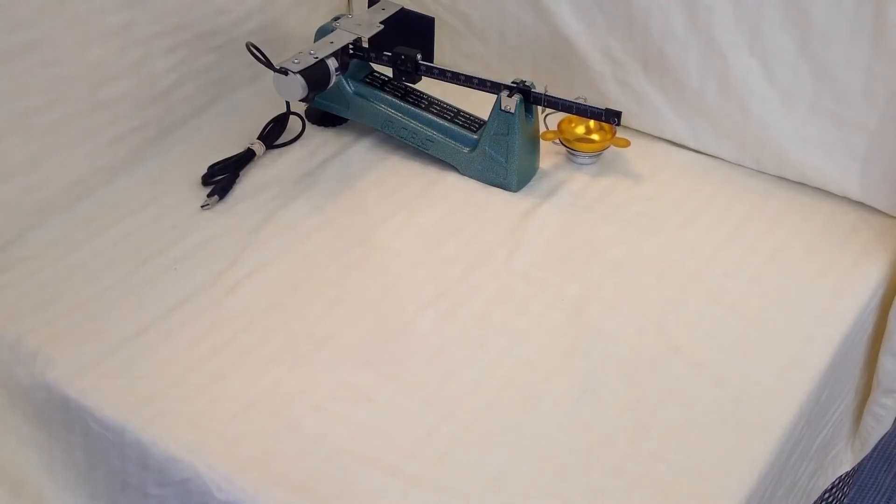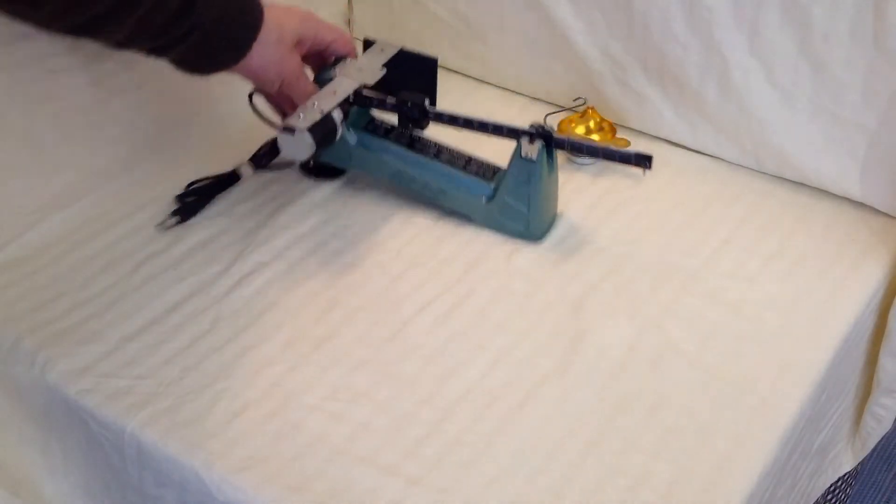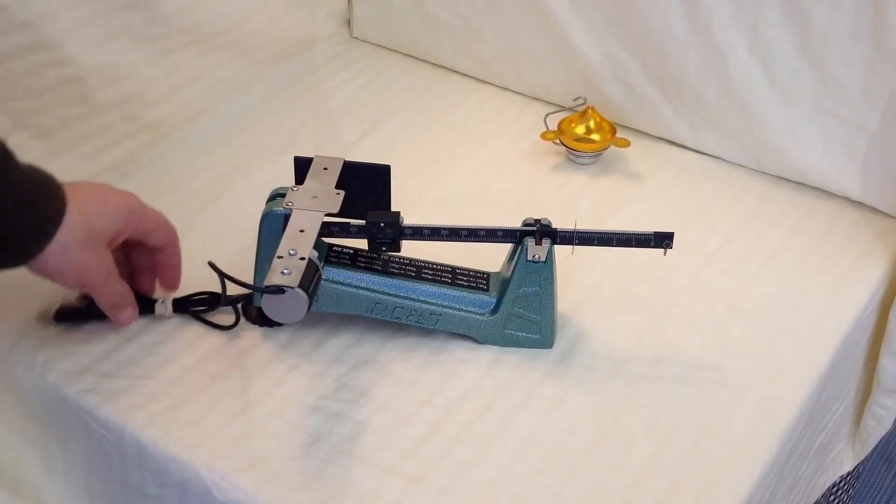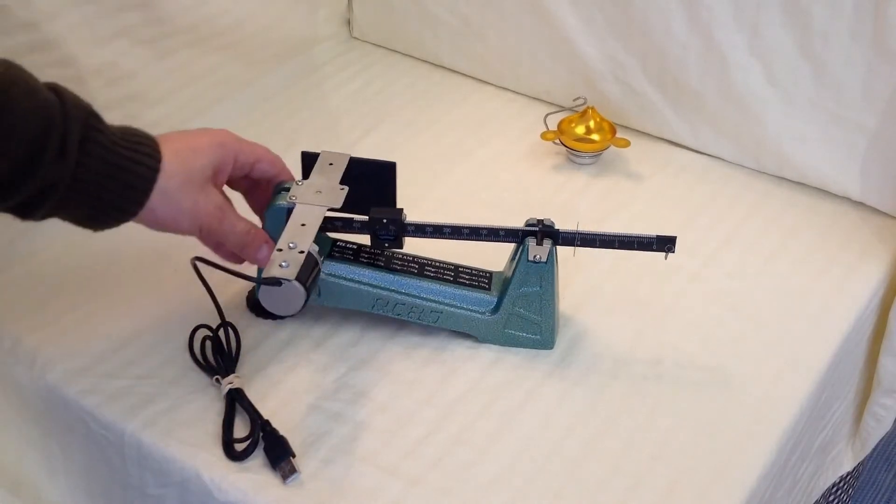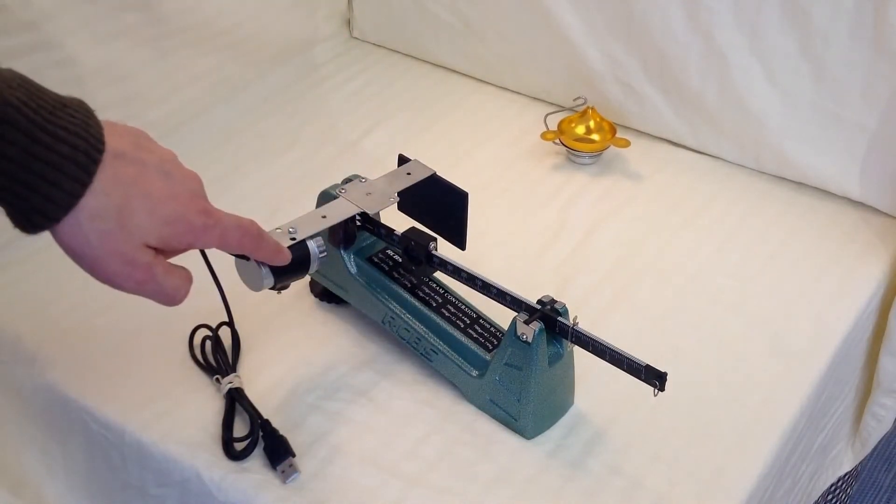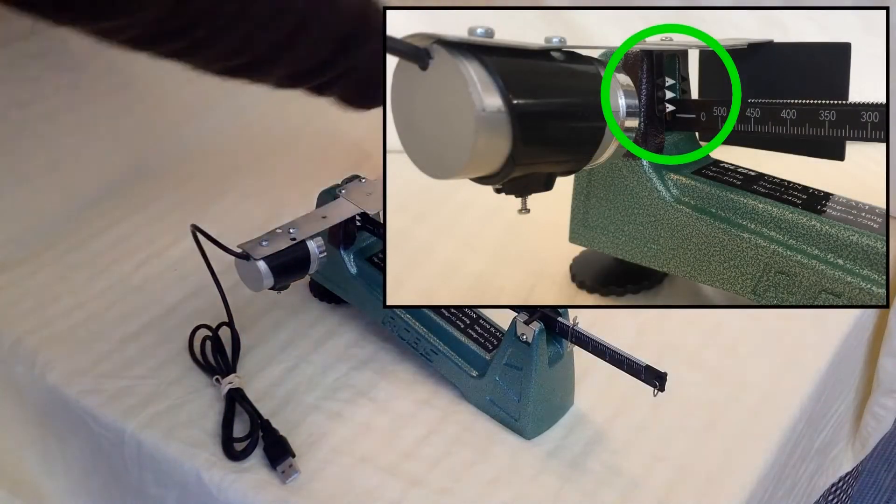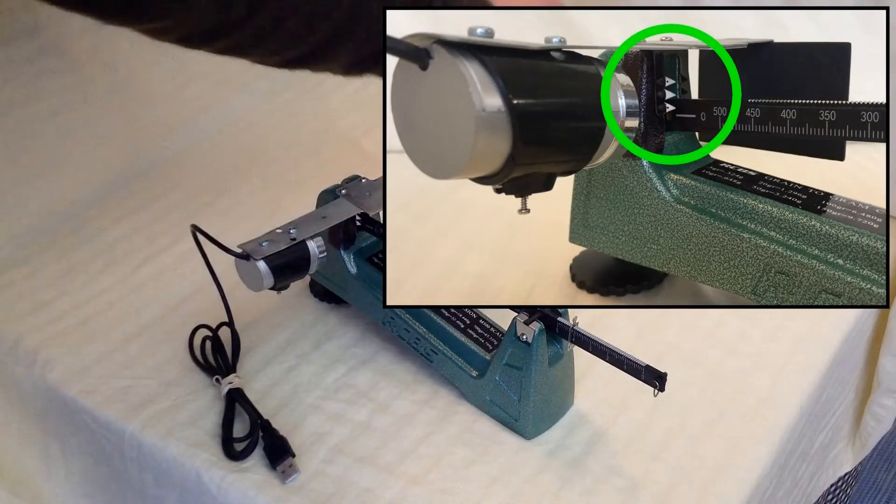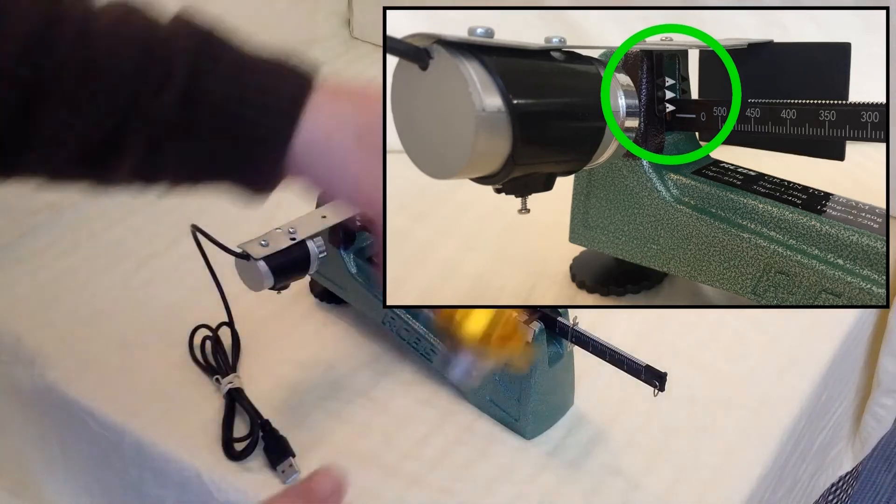The RCBS M500 scale has been slightly modified. All changes are 100% reversible. I have attached a console to hold the background and a web camera. The scale tags have been painted white to increase contrast. The scale tags surroundings have been covered with a black marker for the same reason.